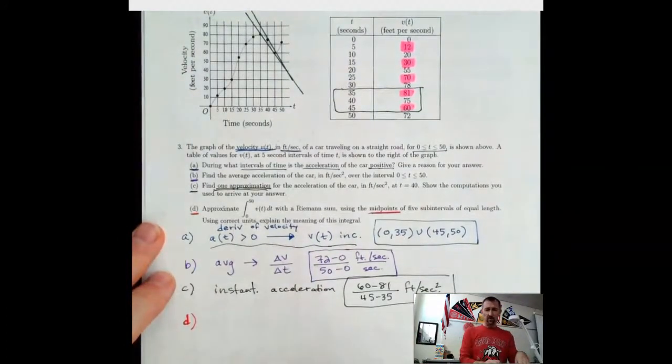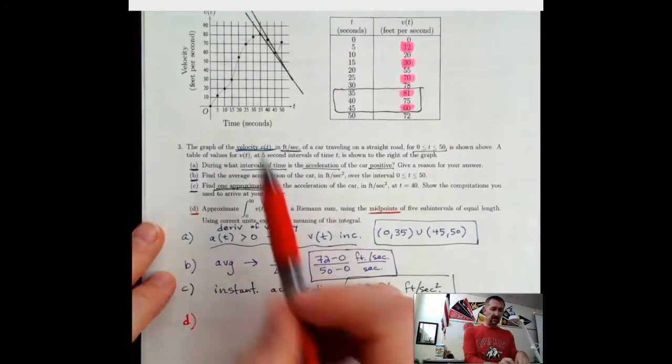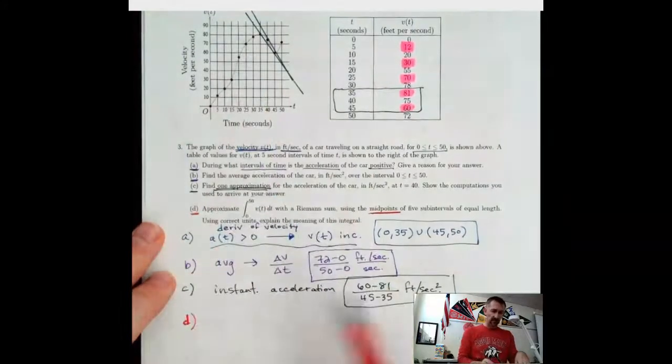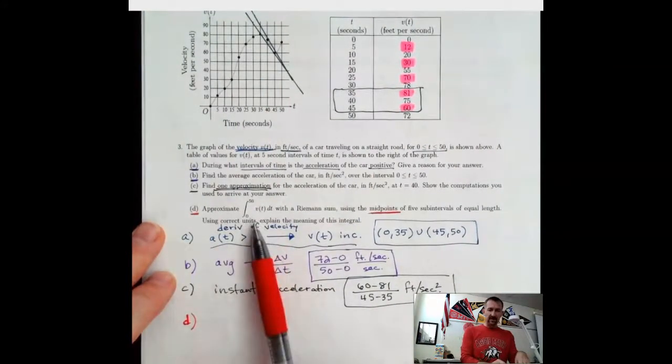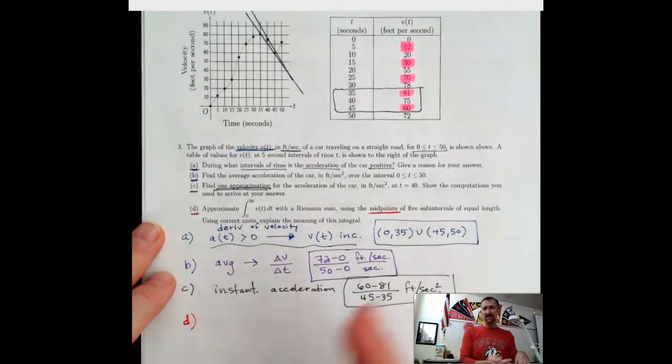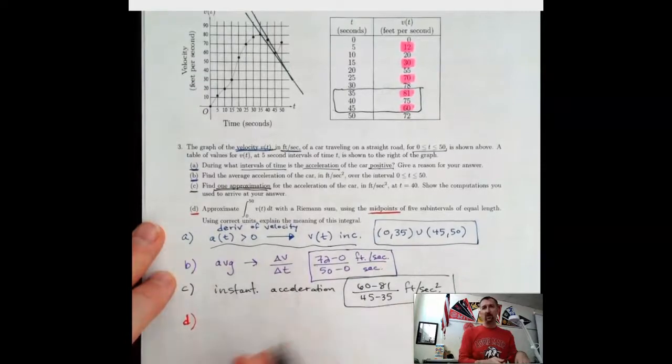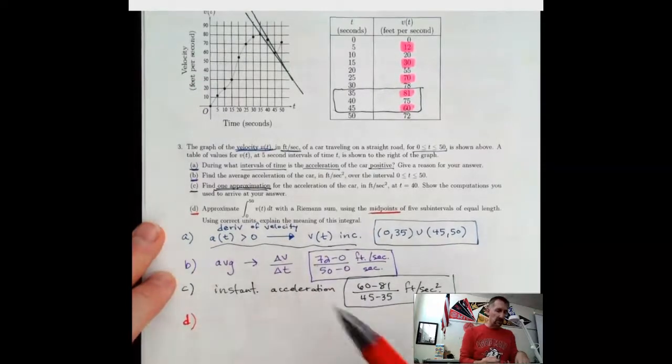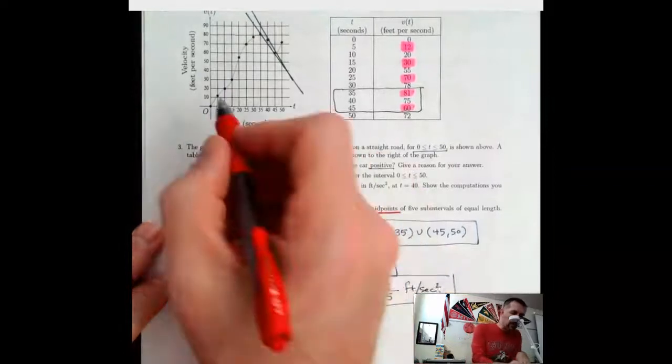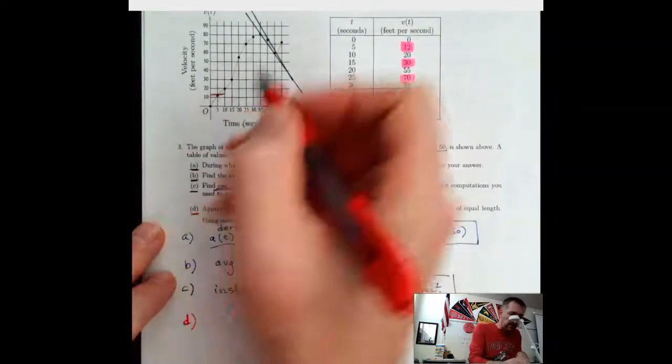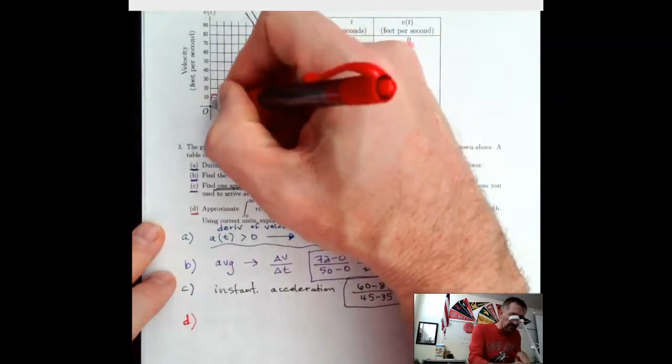It's asking for a midpoint Riemann sum. So it's asking for the rectangles, the area of the rectangles. You can approximate an integral. We're going to find this out in the next lesson. Integrals and area, like slopes and derivatives. So we need to find the area of these using these midpoints. So what we're going to do is there's one of our rectangles.